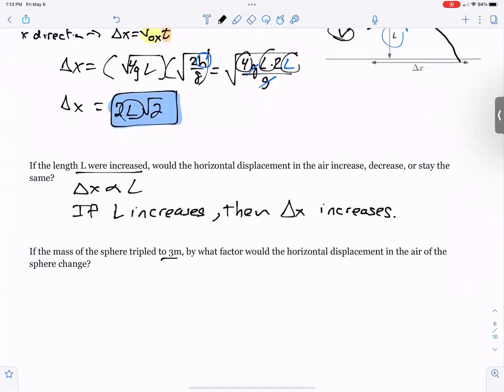Now, if the mass is tripled to 3M, what's going to happen? Well, your horizontal displacement is independent of mass. Therefore, it's independent of any change of mass. And we could say delta X would stay the same. Thank you.